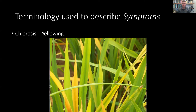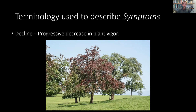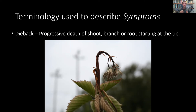There's also a general symptom of decline — a progressive decrease in plant vigor, meaning the plant looks weak and just gets worse over time. Decline can be rapid or slow, and it's something to observe. Then we have dieback, which is the progressive death of plant tissue starting from the tip and working its way back. We usually observe this on outer shoots or branches of trees, shrubs, and herbaceous plants — they start to die from the tip and it works its way back.